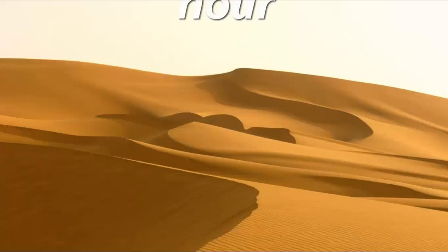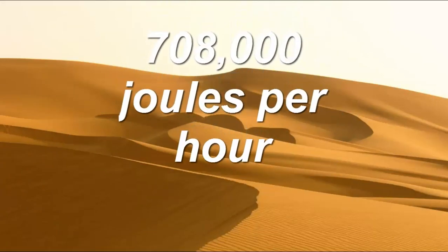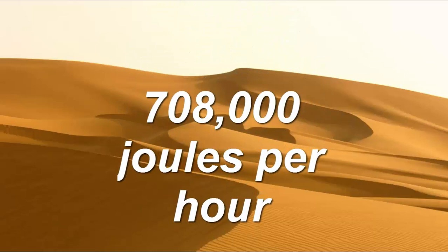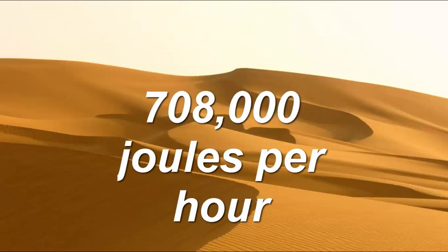At noon, near the equator, the Sun drops on every square meter of ground about 700,000 Joules every hour.